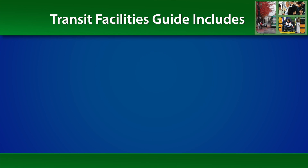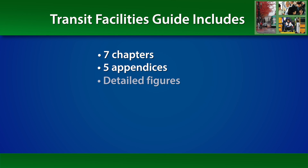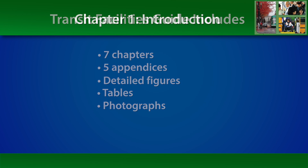The Transit Facilities Guide includes seven chapters and five appendices, as well as detailed figures, tables, and photographs. Here's a brief summary of each of the chapters and the appendices.